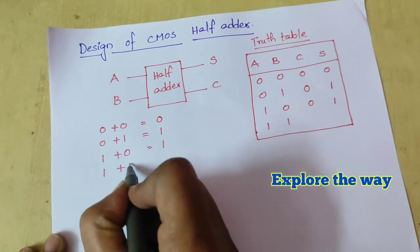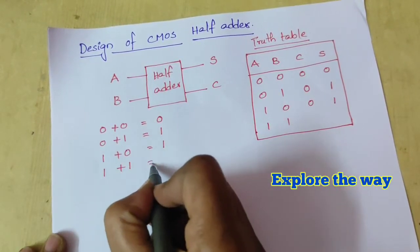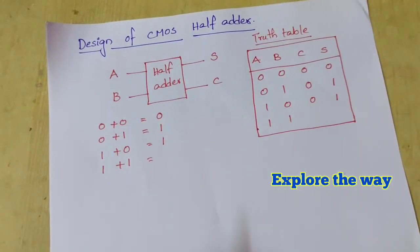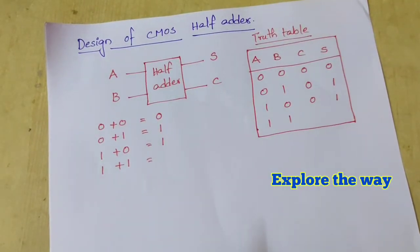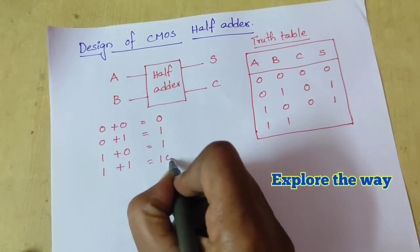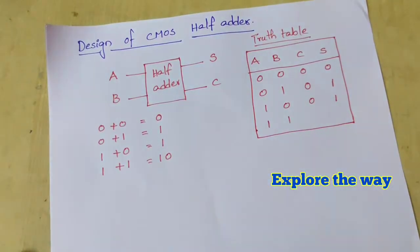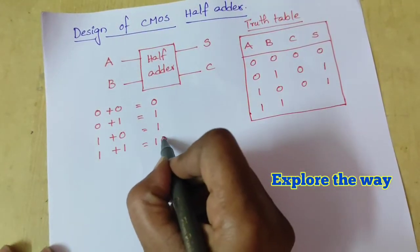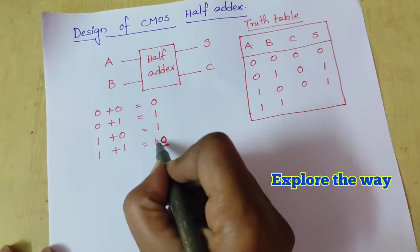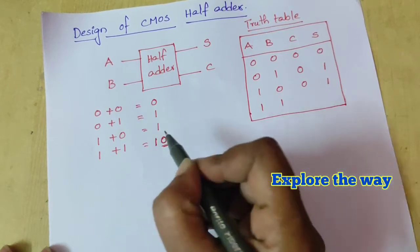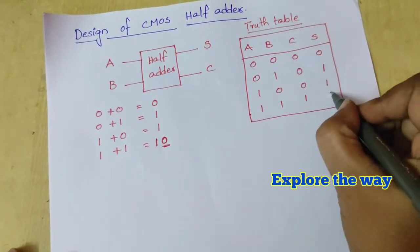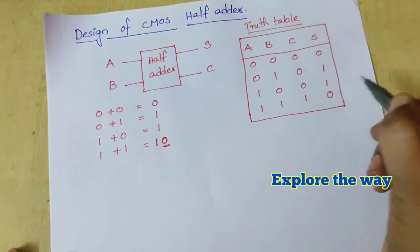For the last combination, 1 plus 1, which equals 2, we write it as binary 10. Here 0 is the sum and 1 is the carry. So carry is 1 and sum is 0.